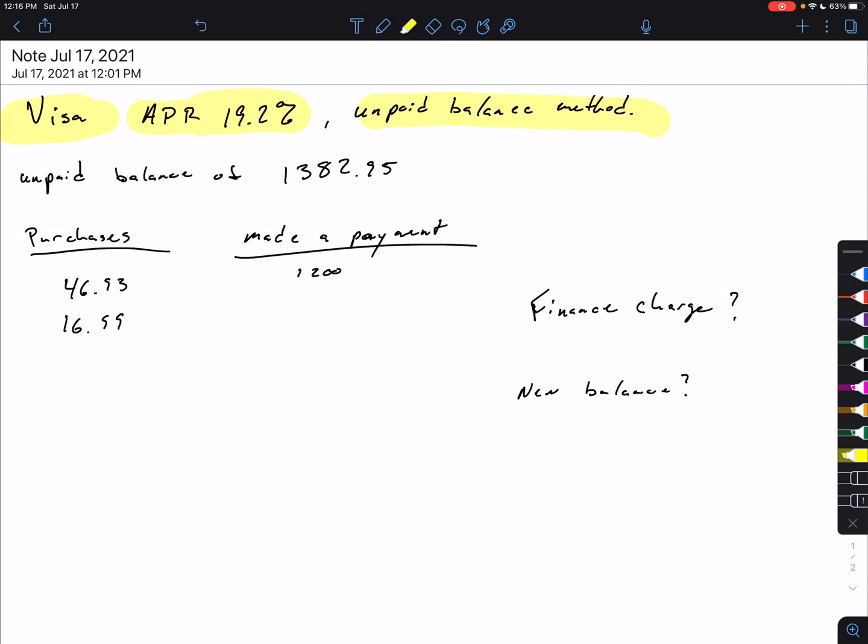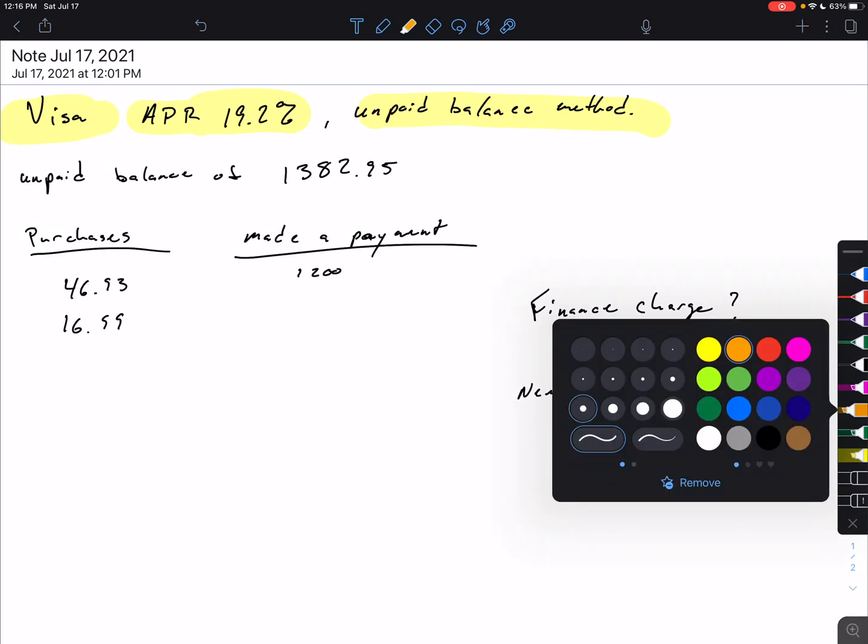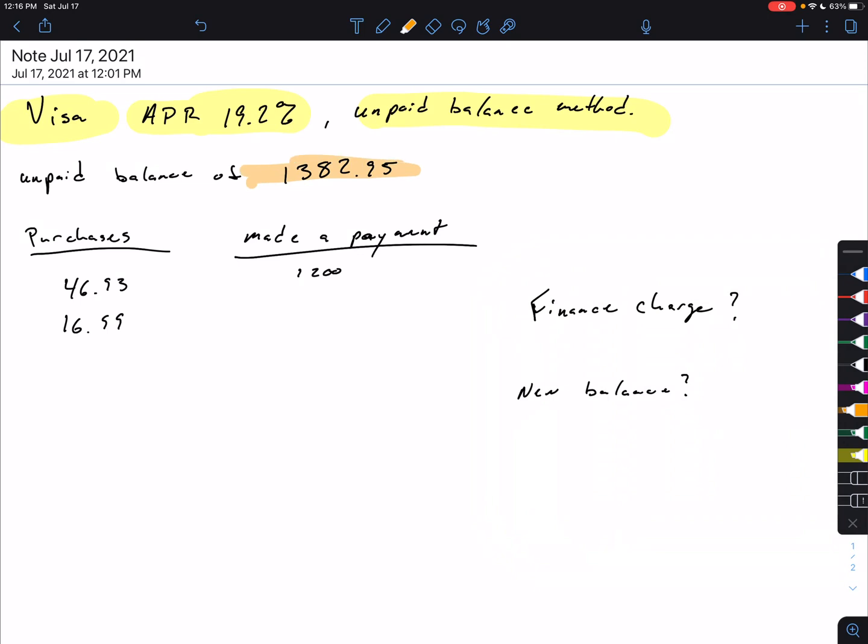And you right now have an unpaid balance of $1,382.95. You've made a couple purchases this month at $46.93 and $16.99, and then you made a payment of $1,200.